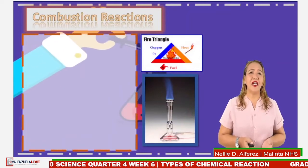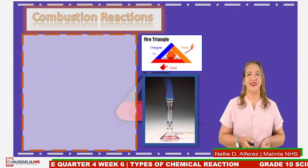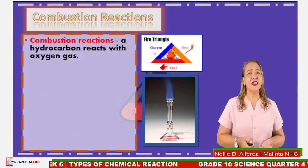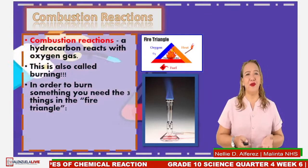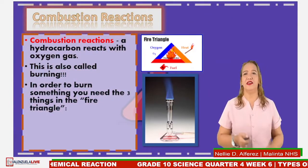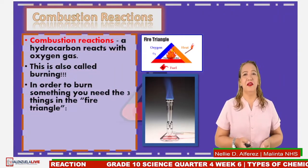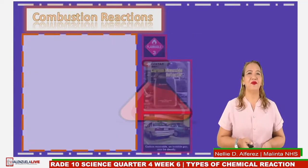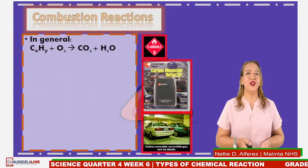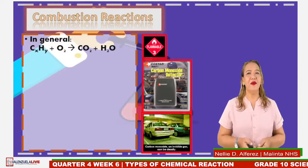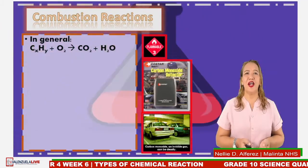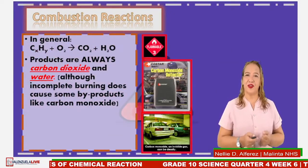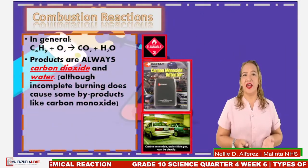The fifth type of reaction is combustion reaction. Combustion means a hydrocarbon reacts with oxygen gas. This is also called burning. In order to burn something, you need three things in a fire triangle: fuel or hydrocarbon, oxygen, and something that sparks or ignites the reaction. The general equation is: CₓHᵧ plus O₂ yields carbon dioxide and water. Always remember, the products are always carbon dioxide and water, although incomplete burning can produce carbon monoxide.